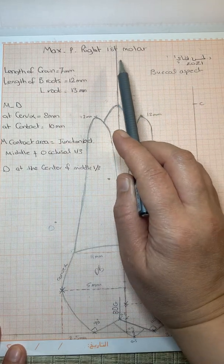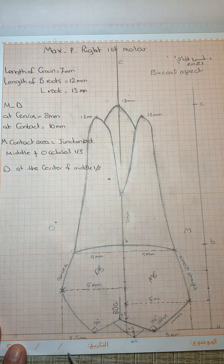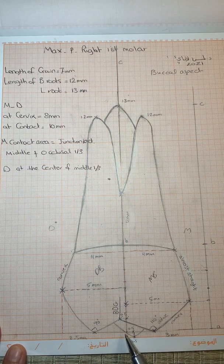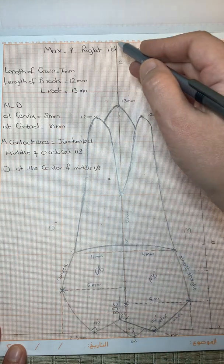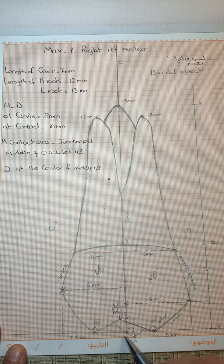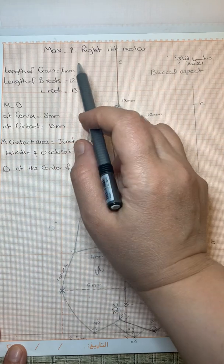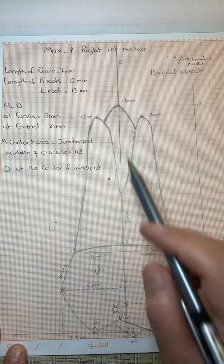For the maxillary right first molar, buccal aspect, we start by drawing the horizontal line 0.5 millimeters from the end of the paper, and the vertical line. Point A is the starting point of our drawing. From A to B is seven millimeters, representing the crown length.